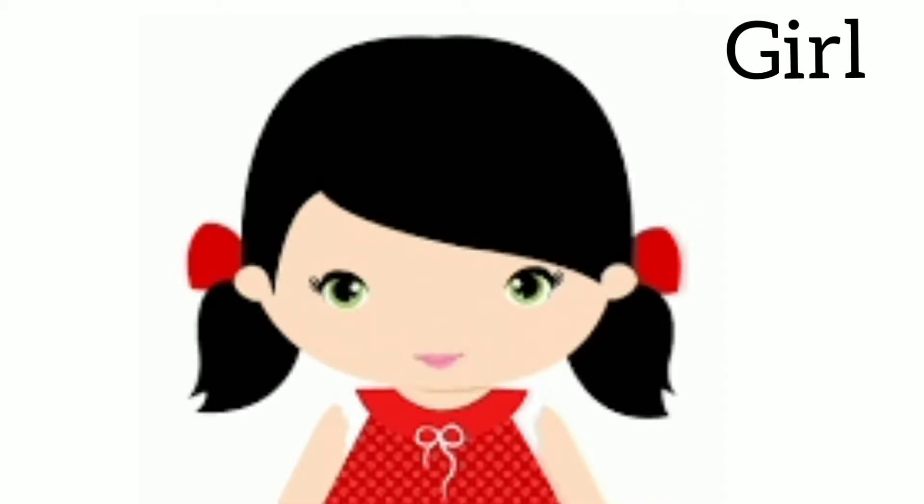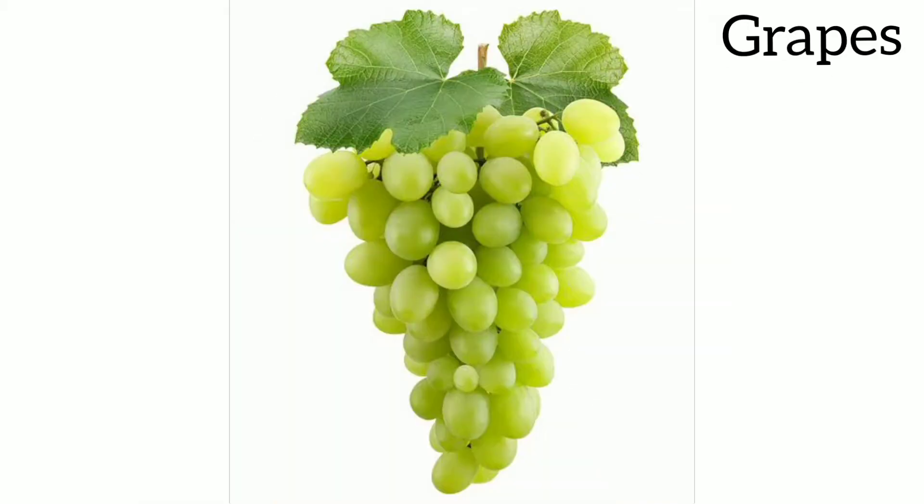G for girl, G for grapes. Today we will write cursive capital G. This is the first line, second line, third line, and fourth line. We will start writing from the third line.